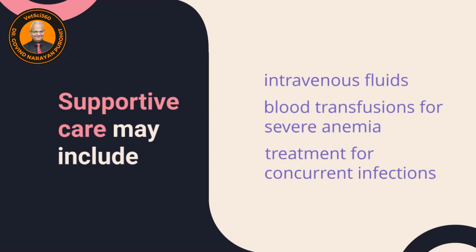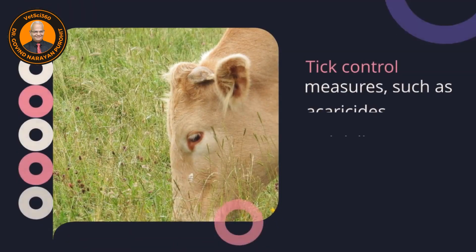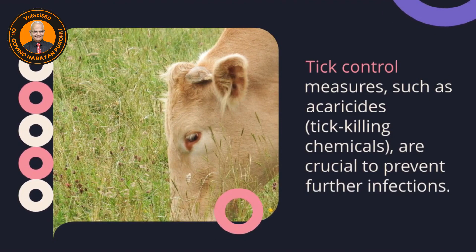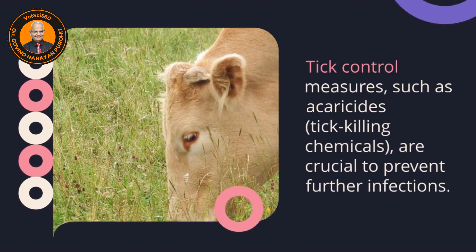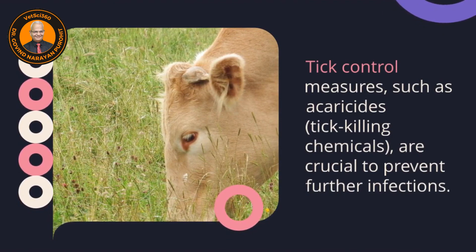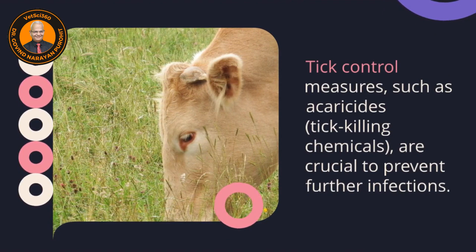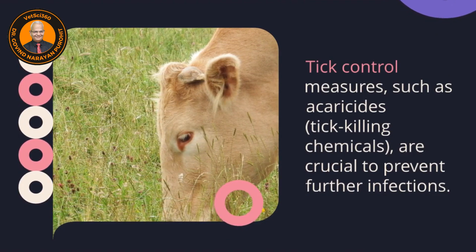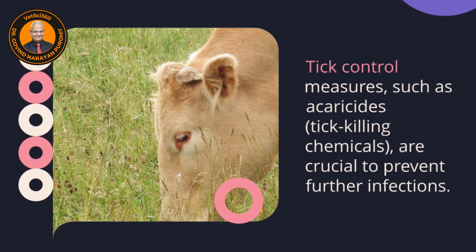Supportive care should include intravenous fluids, and sometimes blood transfusion may be required for severe anemia, along with treatment for concurrent infections. One must also administer analgesics to reduce the high fever and other supportive drugs as required. Tick control measures such as acaricides — tick-killing chemicals — are crucial to prevent further infections with Babesia.